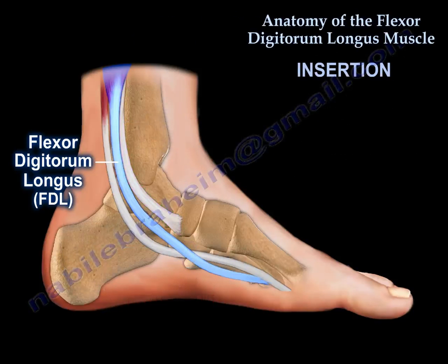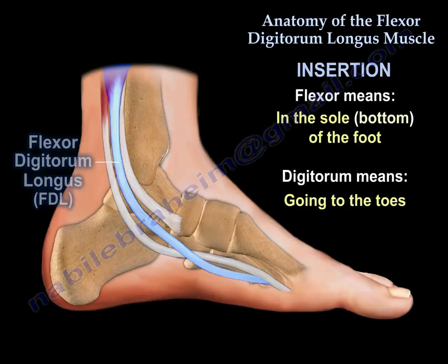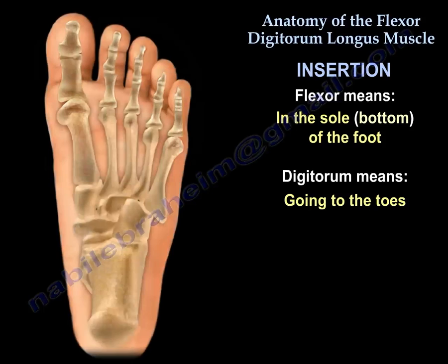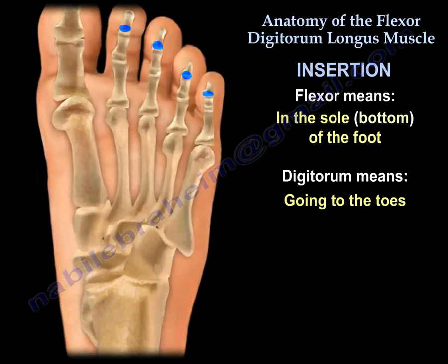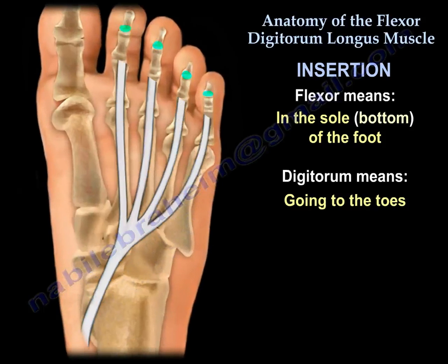How about the insertion? Flexor digitorum longus — 'flexor' means it is in the sole or bottom of the foot. 'Digitorum' means it's going to the toes or fingers. 'Hallucis' means it's going to the big toe. 'Pollicis' means it's going to the thumb. In this case it is the flexor digitorum, so it is going to the toes.